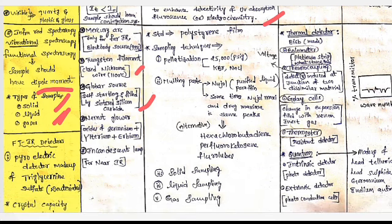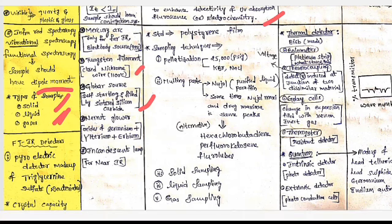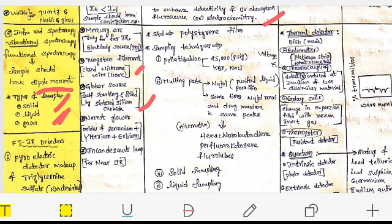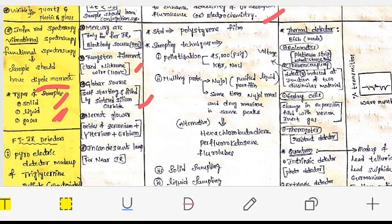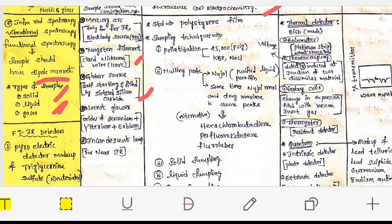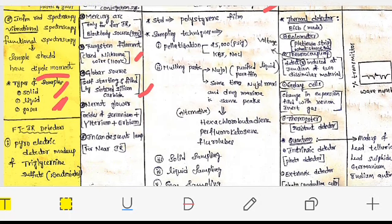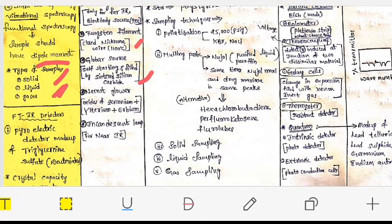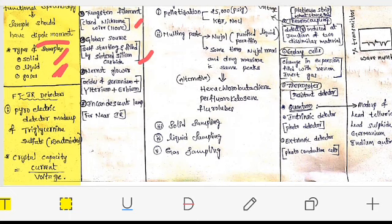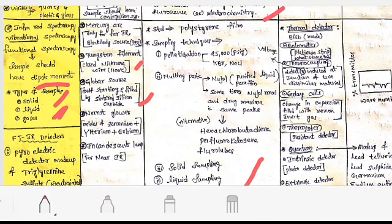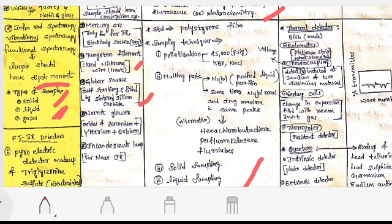In thermal detectors, they are made up of BiSb. Bolometer contains platinum strip and the principle used is Wheatstone bridge. Thermocouple detector works on the basis of voltage induced at the junction of two different materials. Golay cell changes in expansion filled with xenon gas. Another type is thermistor that mainly works on the basis of resistance detector.